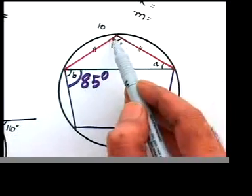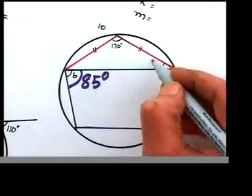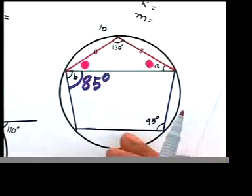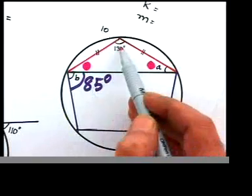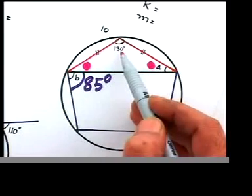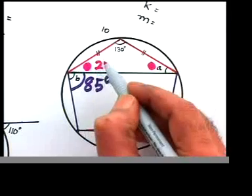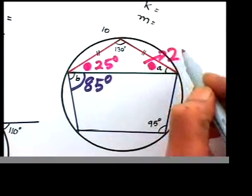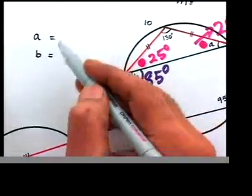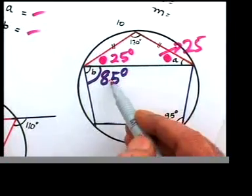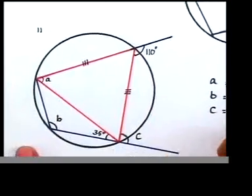Looking at the red triangle, the equal marks tell us it's an isosceles triangle. The two base angles must be equal. The top angle is 130°, so 180° − 130° = 50°, divided by two gives 25°. Both base angles are 25°, so a = 25°. We got b = 85° and a = 25° — not bad for an easy question. Let's move to question 11.